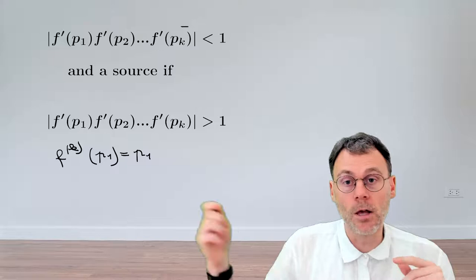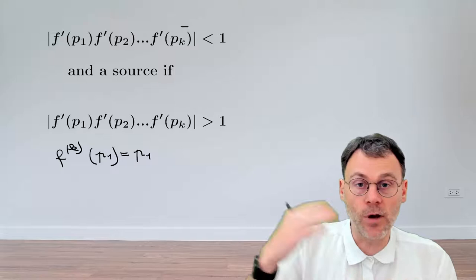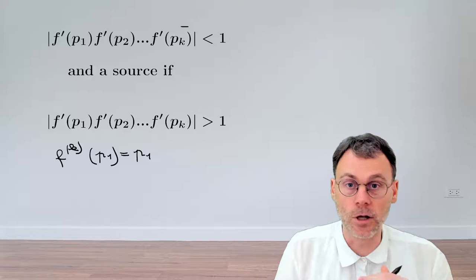So here we choose p1, but there's nothing special about this choice of p1. Obviously, if you have a periodic orbit, you can just pick any one of these periodic points to be p1, so that doesn't really matter.